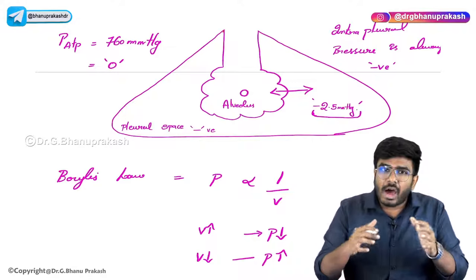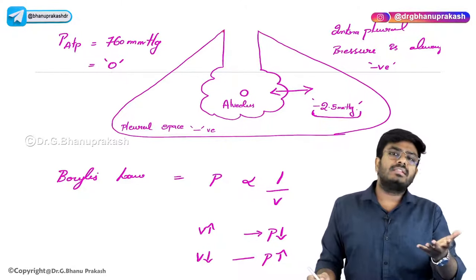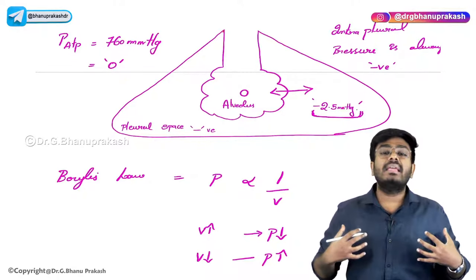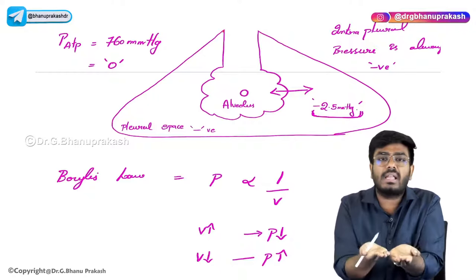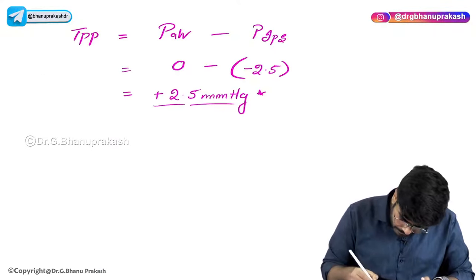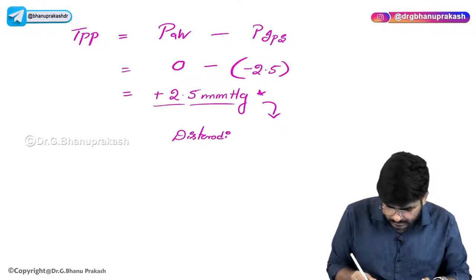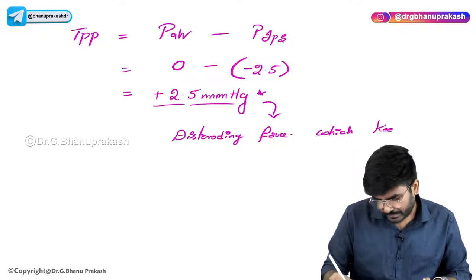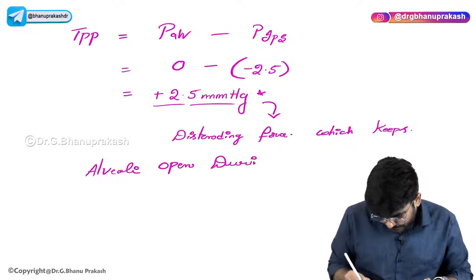Think logically: your alveoli are surrounded by vacuum during resting state. The intrapleural vacuum of minus 2.5 mmHg keeps the lungs and alveoli open and slightly expanded even at rest. This transpulmonary pressure of plus 2.5 mmHg acts as a distending force which keeps the alveoli in an open state during resting.